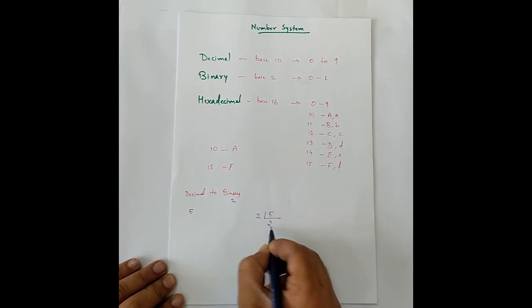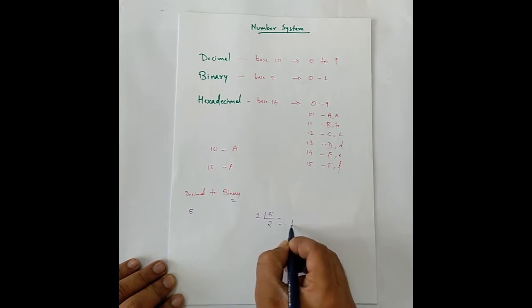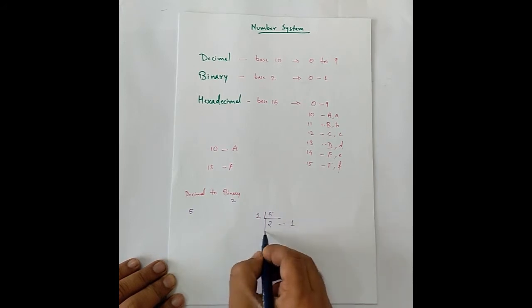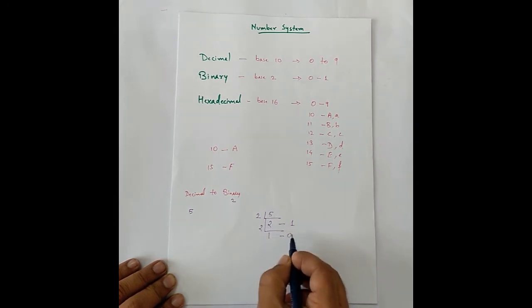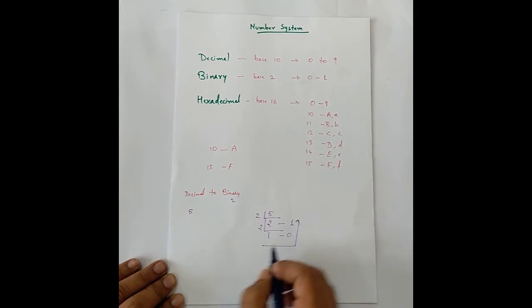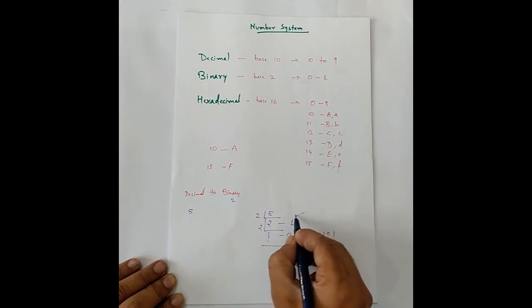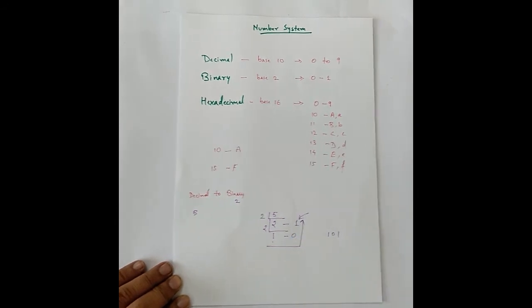2 into 2 is 4, so we have a remainder of 1. Then we divide it again. 2, 1 times is 2 and the remainder is 0. And then we go all the way back. So our binary form is 1, 0, 1. This is the least significant bit. You will understand this in a moment when we discuss the weightage of these numbers.